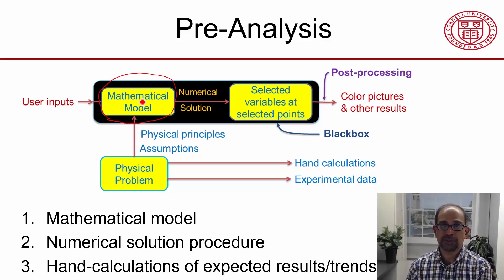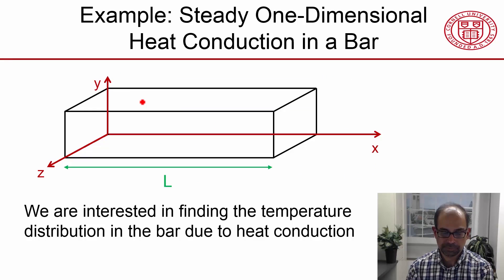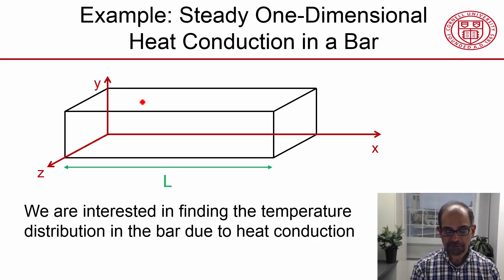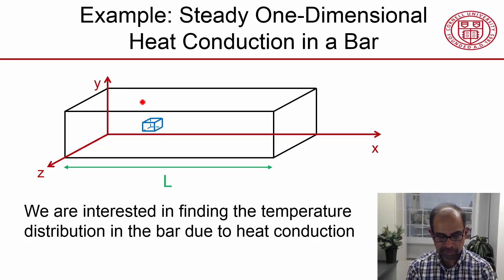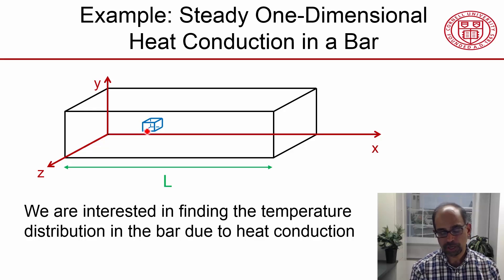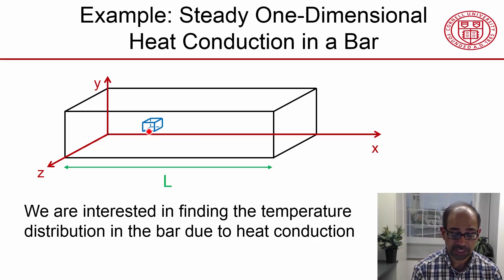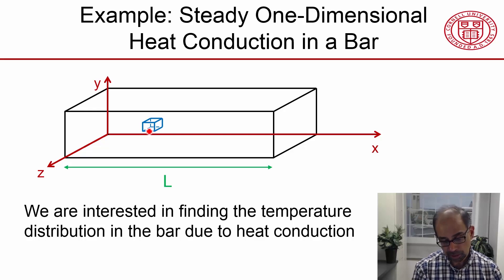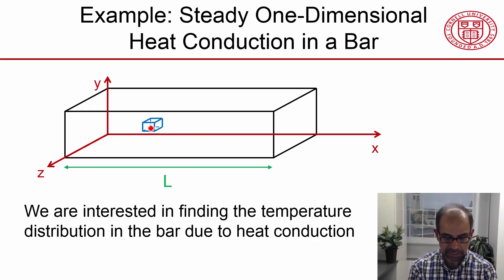Let me talk about the governing equation. Going back to my graphic of the example problem, this indicates a tiny volume within the element — a vanishingly small volume within the element. It's called a control volume, and in my next slide I consider this volume.